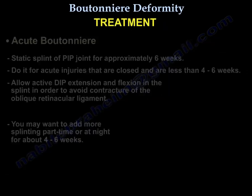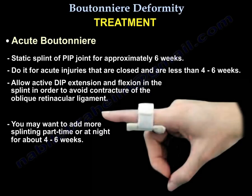Treatment of acute Boutonniere deformity: apply a static splint to the PIP joint for approximately six weeks. This is for acute closed injuries less than four to six weeks old. Active DIP extension and flexion are allowed within the splint to avoid contracture of the oblique retinacular ligament. Part-time or nighttime splinting may be added for an additional four to six weeks.